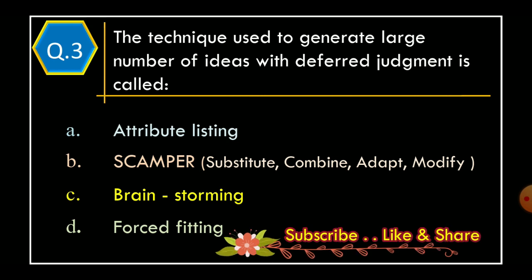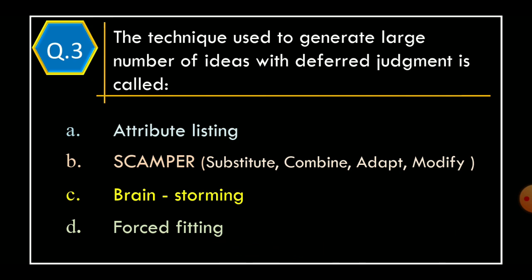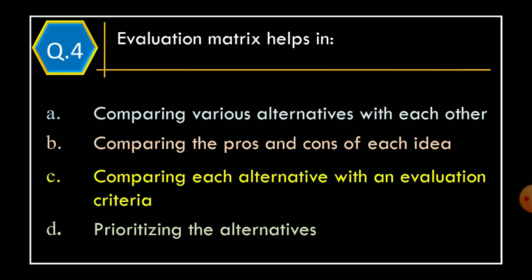Question 3: The technique used to generate large number of ideas with deferred judgment is called - Option A: Attribute Listing; Option B: SCAMPER (Substitute, Combine, Adapt, Modify); Option C: Brainstorming; Option D: Force Fitting. The correct option is Option C, Brainstorming.